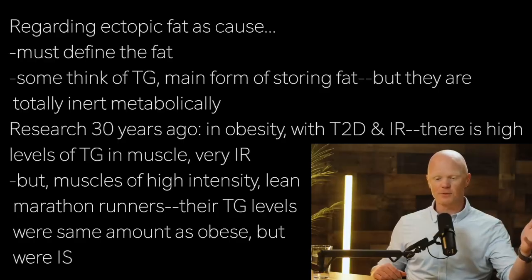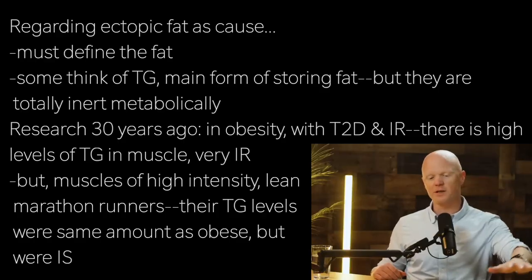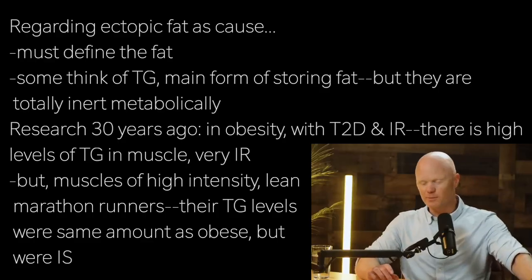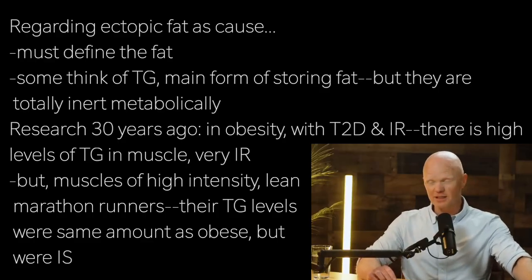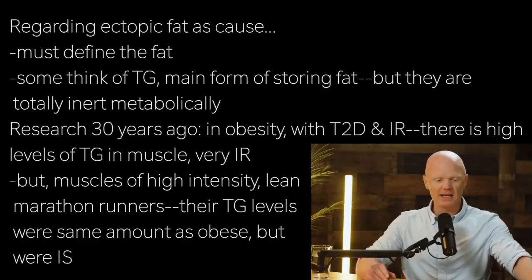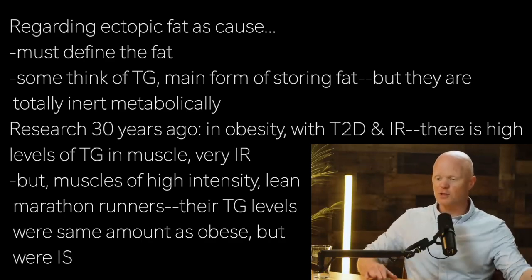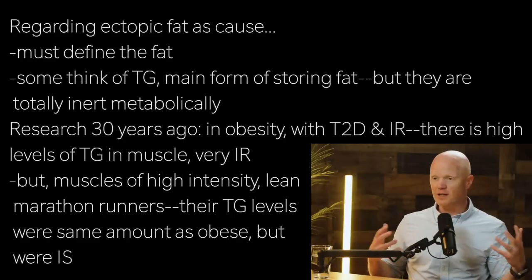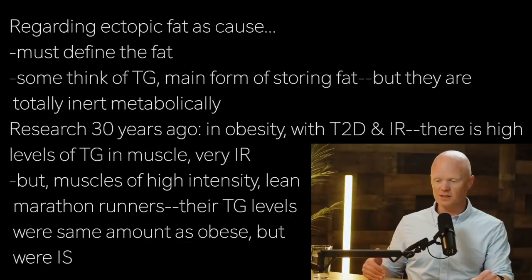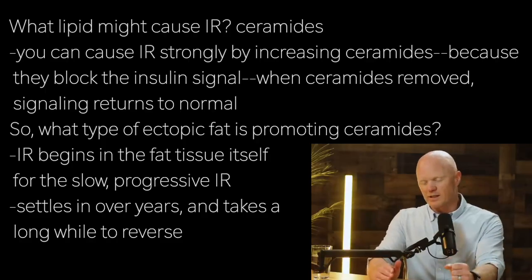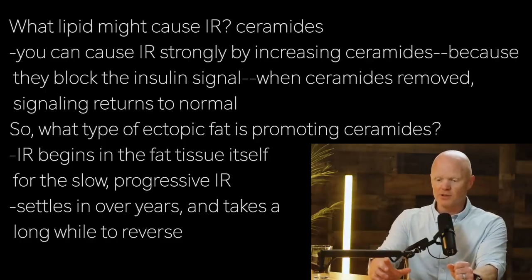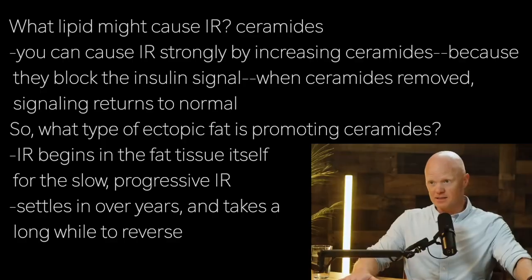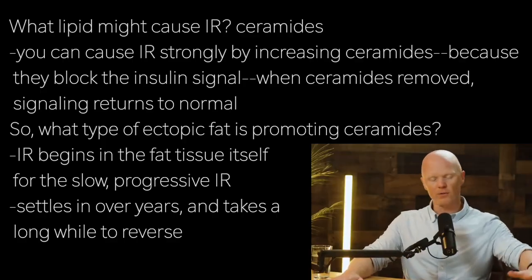Some people said at the time that high muscle triglycerides cause insulin resistance. And yet, when they did muscle biopsies from very lean, exceptionally insulin-sensitive marathon runners, they had just as much fat in their muscle in the form of triglycerides as the obese type 2 diabetics did — and they were very insulin-sensitive. So it couldn't be the fat stored in the muscle. The same could be said of the liver: if the liver has triglycerides, it's not the triglycerides that are causing insulin resistance.